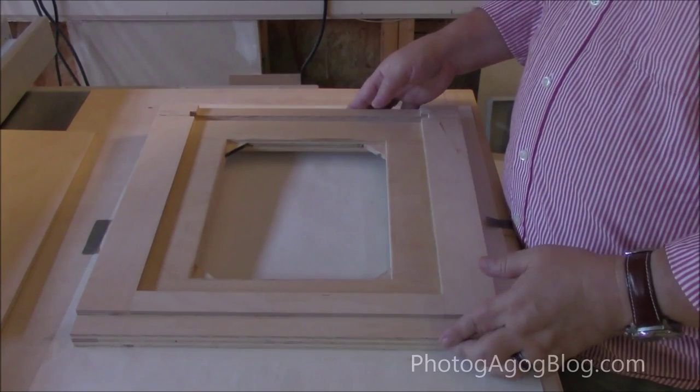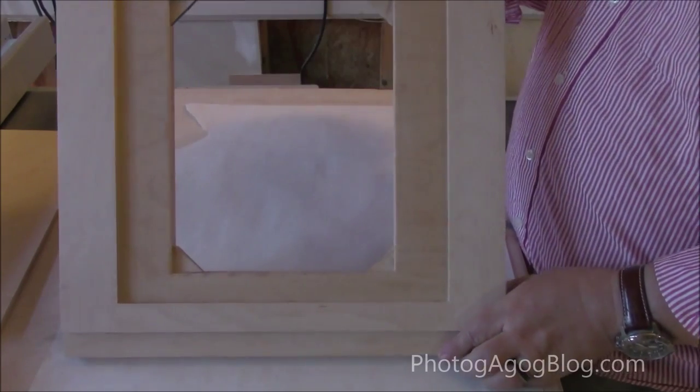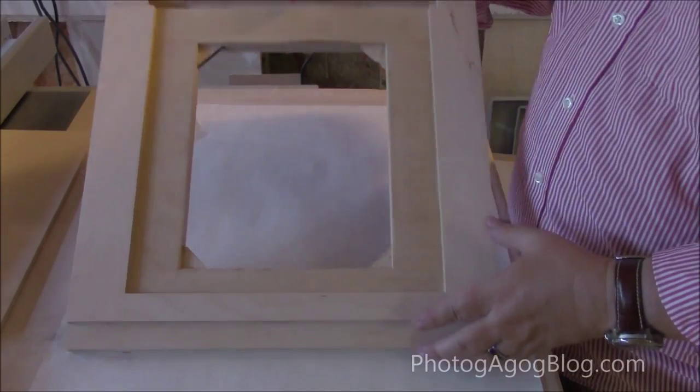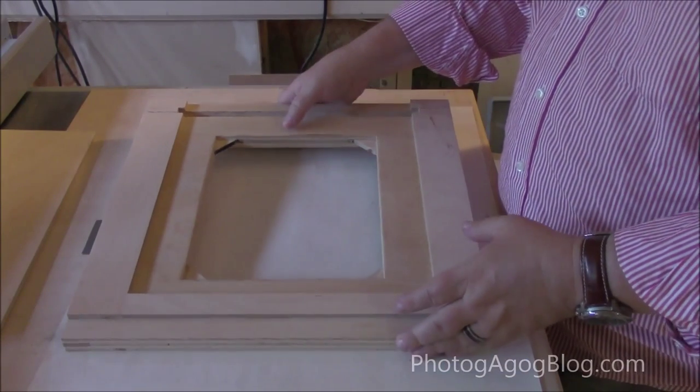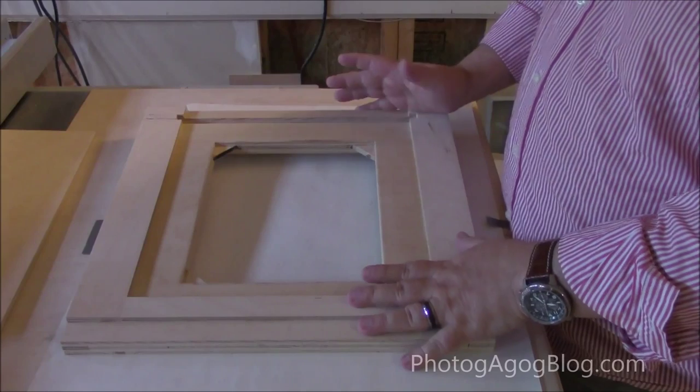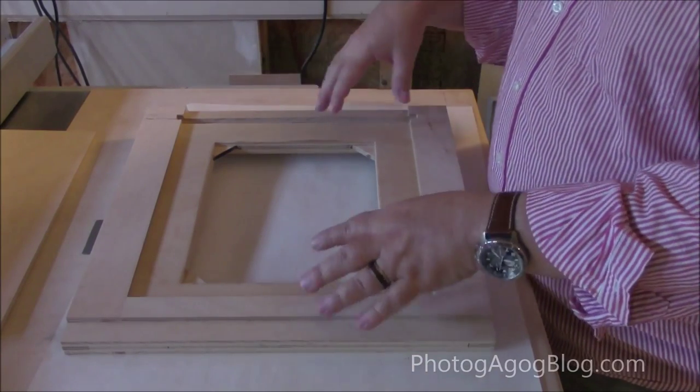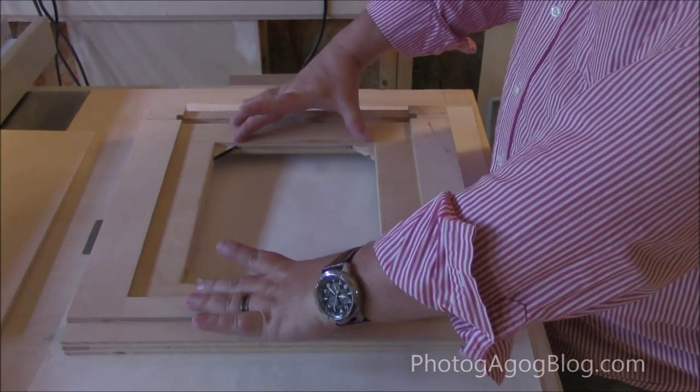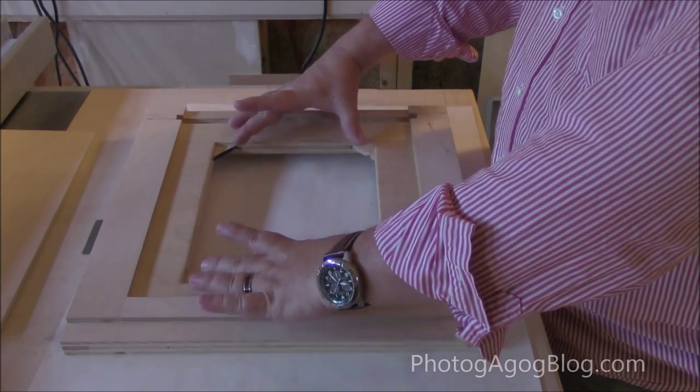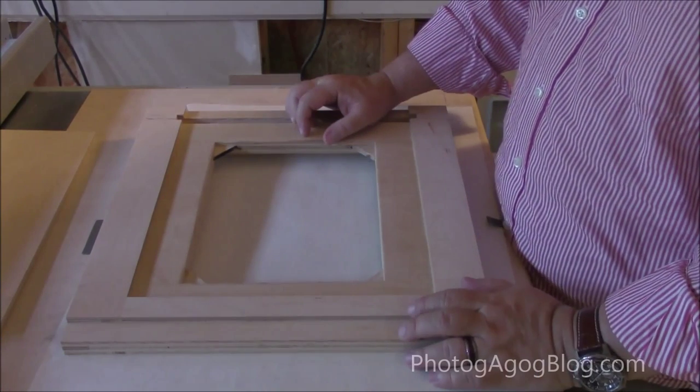I wanted to go over the construction of the film plane, the film holder for the tin type. What you're looking at here is going to be for an 8x10 image and I'll have inserts that will shrink it down to a smaller size.